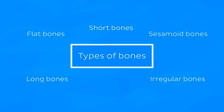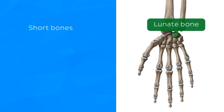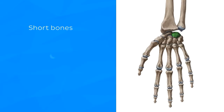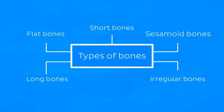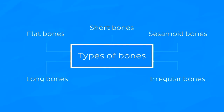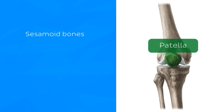Short bones are those knobbly little round bones found in your wrist and ankle joints, like the lunate bone here. They tend to have strange names based on their perceived shape. For example, lunate means moon-shaped. Sesamoid bones, like your kneecap or patella, are rounded bones which form within tendons. These bones work to increase the mechanical advantage of the muscles whose tendons they're found within.